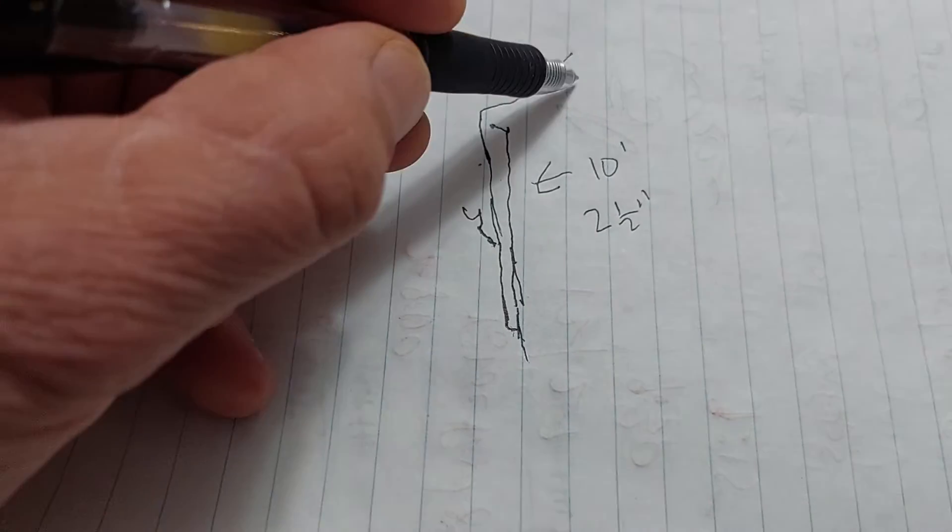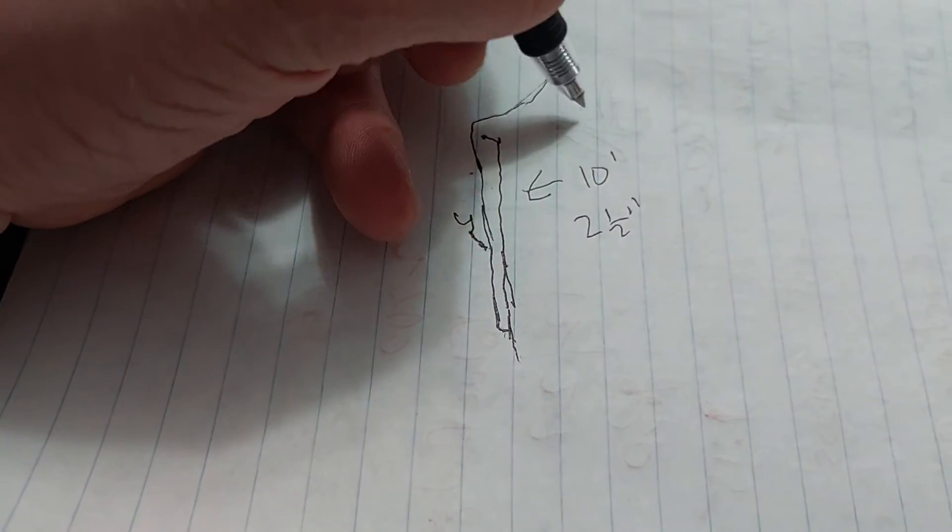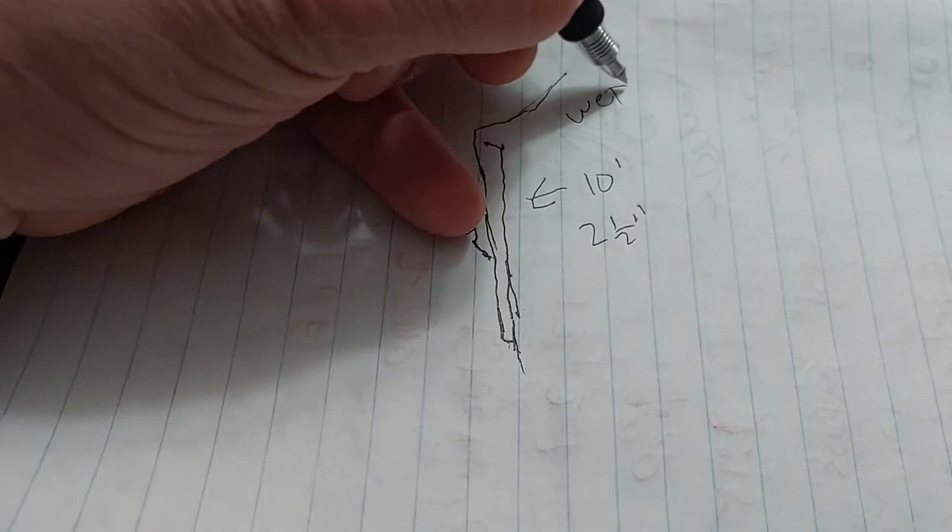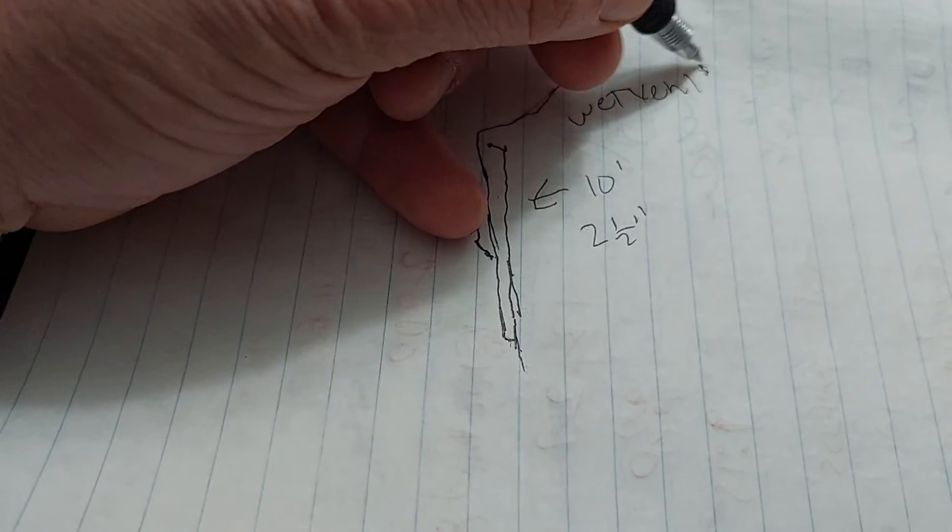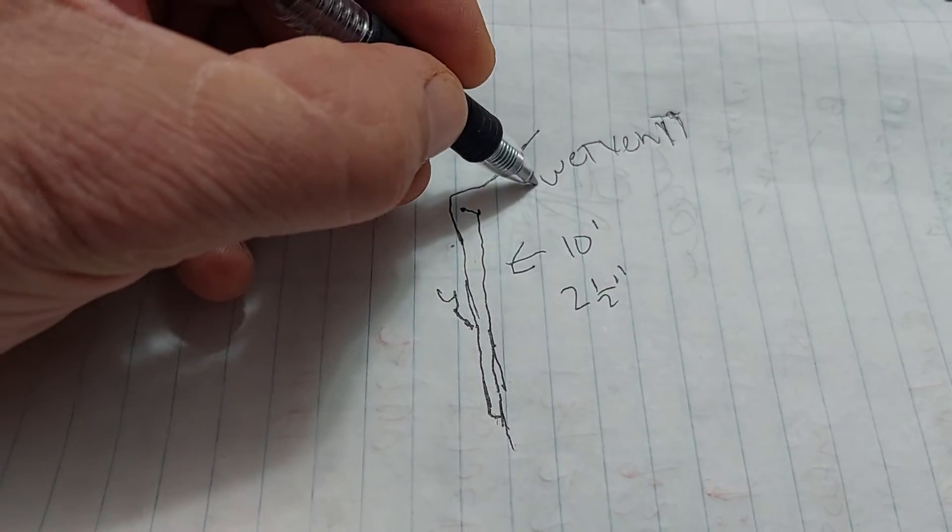Now this pipe can be as long as you want because this is the wet vent. It's hard to write while looking through the camera, but this is your wet vent, so there's no limit to how long that can be.